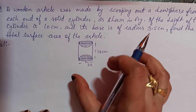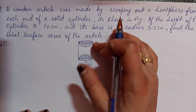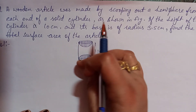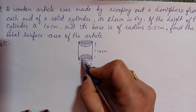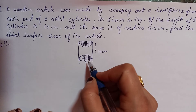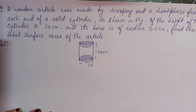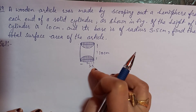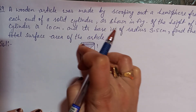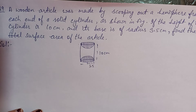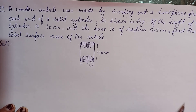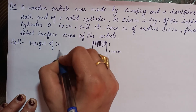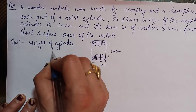Okay, Question 9. You have a wooden article. It is cylindrical in shape, but two ends are scooped out — meaning a hemisphere is made at each of the two ends. You have to find the total surface area. The height of the cylinder is 10 cm and the radius of the cylinder is 3.5 cm.